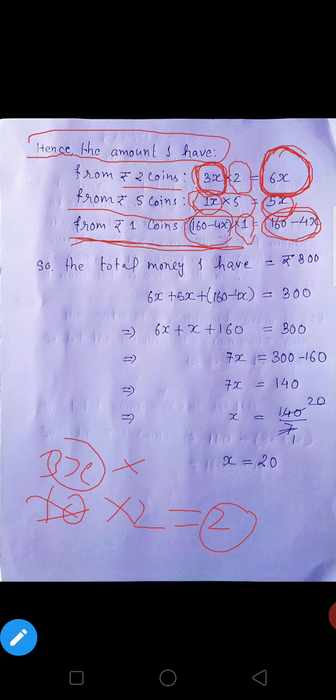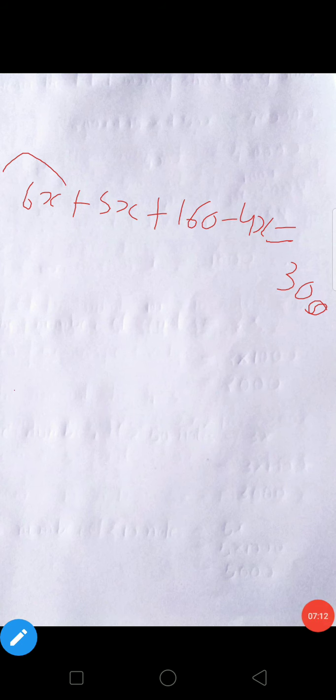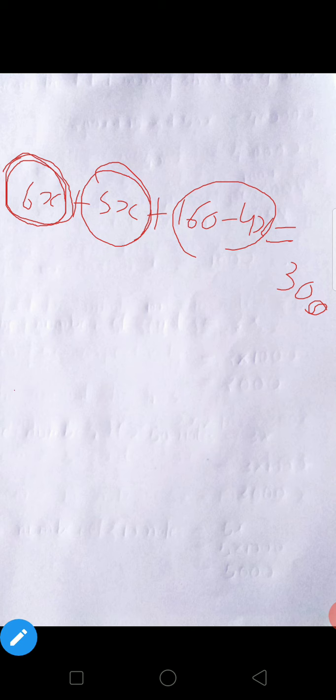This is total amount. So the total money I have, there is a total of 300 rupees, so how much? 300 is total, this will be 2 rupee sikka, this is 5 rupees total. 6x plus 5x plus 11x together or yeh minus 4x yaha either, plus 160 equal to 300.